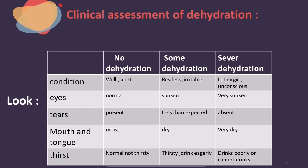Next, look at the eyes: normal means no dehydration, sunken means some dehydration, very sunken means severe dehydration. If you are unsure whether the eyes are sunken, you can ask the mother if the child's eyes look unusual to her. For tears: when the baby cries, tears present means no dehydration, less than expected means some dehydration, absent means severe dehydration. For the mouth: moist means no dehydration, dry means some dehydration, very dry means severe dehydration.